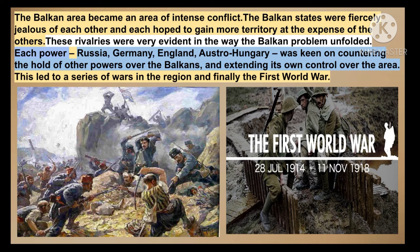When there were internal conflicts, the European powers thought it was the right time to capture this area. European powers like Russia, Germany, England, and Austro-Hungary were very much interested in controlling this Balkan region. As a result, Russia, Germany, England, and Austro-Hungary were all fighting for this Balkan region — there were small conflicts between them because all of them wanted this particular region. This led to a series of wars in the region, and finally the First World War came.